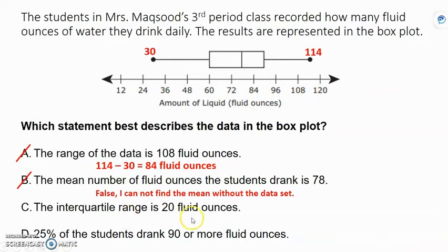Interquartile range is 20 fluid ounces. Okay, remember, length of the box. So I start at 60. It ends at 90 because those numbers, that 90 is between 84 and 96. Remember, add those two together and divide by 2. So if I subtract those two, I get 30 fluid ounces.